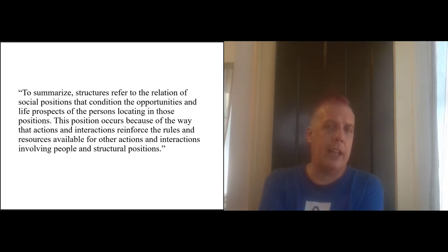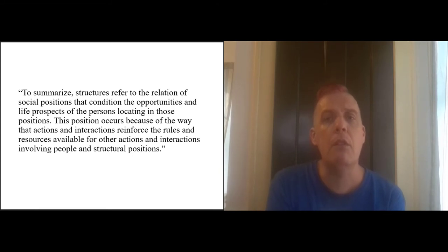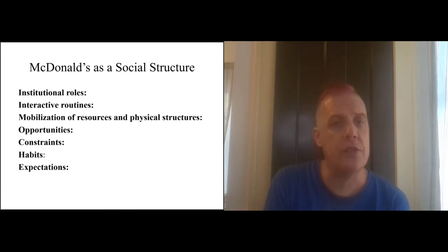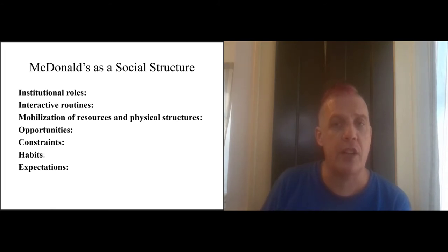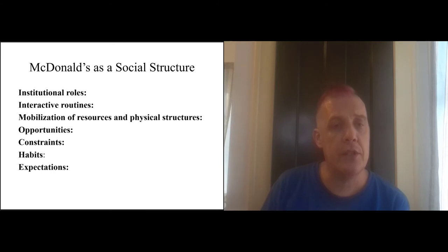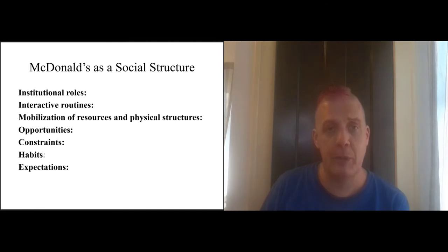I think we can unpack that. I want to think about a completely everyday example of a social structure: a McDonald's restaurant. A McDonald's is actually a social structure, and that means it's going to have all of these elements: institutional roles, interactive routines, a mobilization of resources and physical structures, opportunities, constraints, habits, and expectations. Let me just run through all of these.